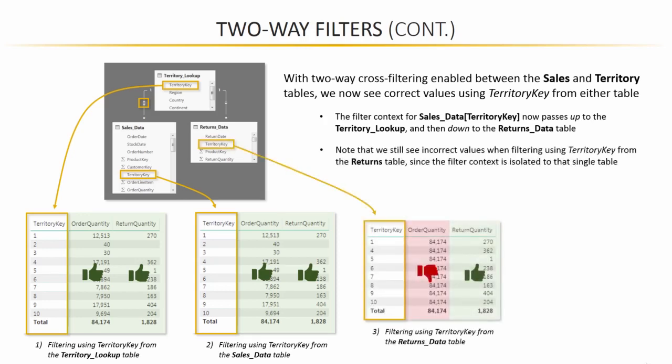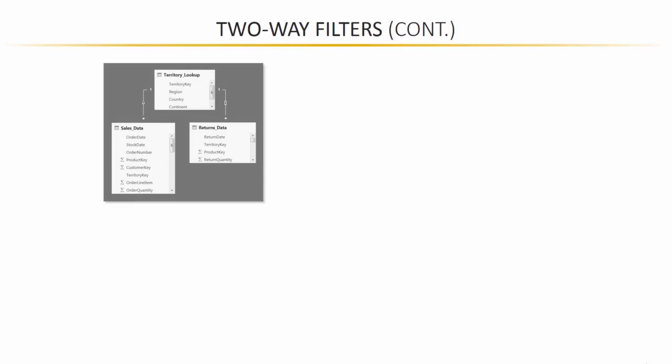Now, as you'd expect, if we pull in territory key from returns, same story as before, that filter context is trapped in the returns data table because we've got that one-way relationship between territory and returns. So let's keep this idea going a little bit and consider a similar model with one different.